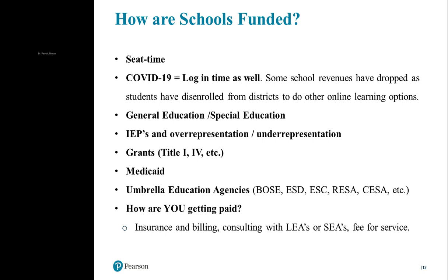The federal government watches how high or low IEP enrollment rates are. There's a general target that a school district should have anywhere from about 10.5% to 12.5% of their students in special ed. If you go above or below that range by a certain fraction, you have to justify why you are overrepresented or underrepresented in your IEP counts.